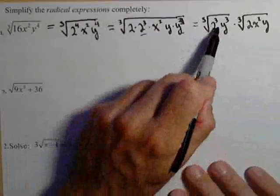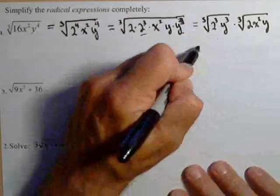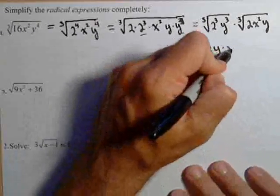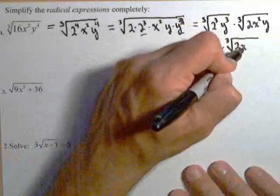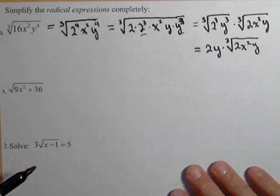Because here we're taking the cube root of perfect cubes, the cube root of 2 cubed is 2, the cube root of y cubed is y. So we have 2y times the cube root of 2x² y, and we've simplified this one as much as we possibly can.